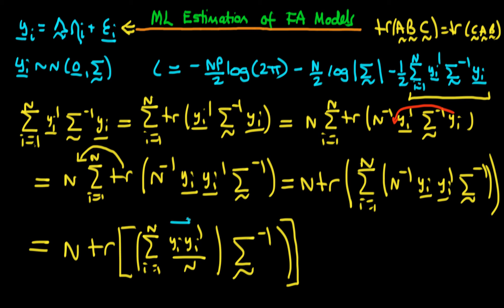We realize that this term inside the summation is the sample covariance observed for an individual i. When we take the sum of that, normalizing by a factor of n, it represents the sample variance covariance matrix. So we can rewrite this as n times the trace of the sample variance covariance matrix times sigma to the power minus 1.